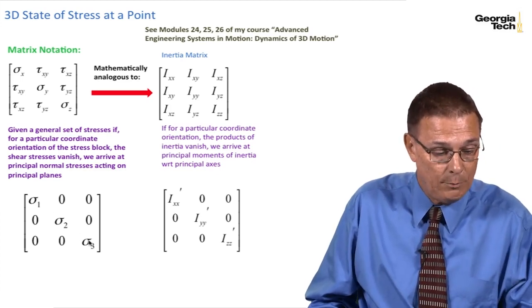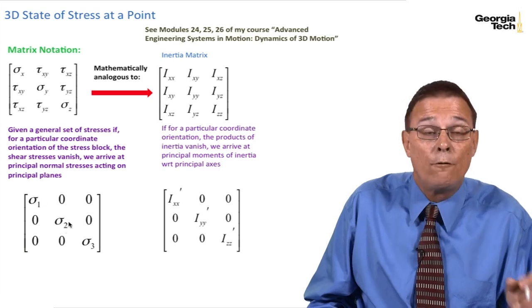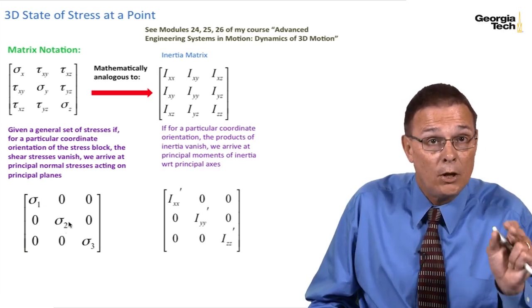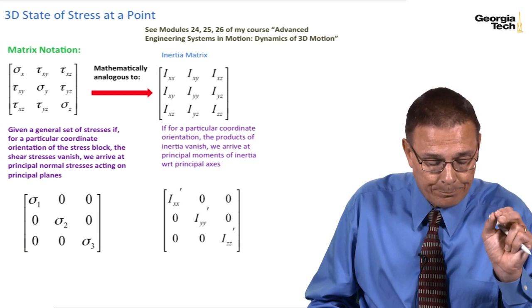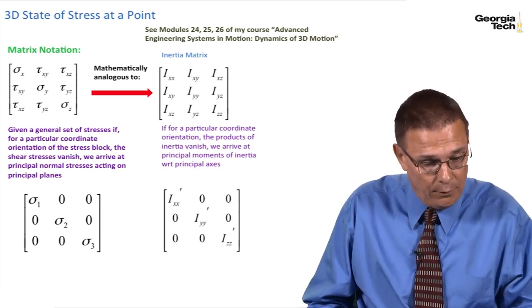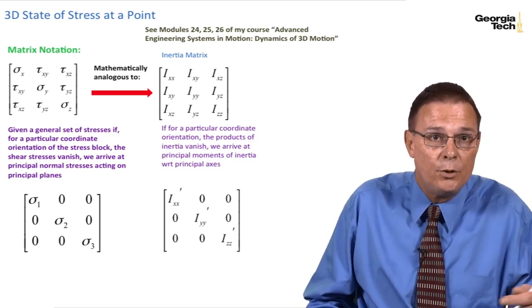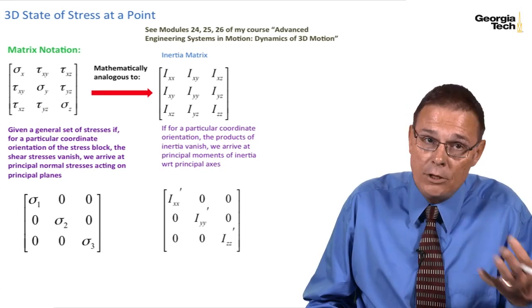And we call those sigma 1, sigma 2, and sigma 3. Now, we found sigma 1 and sigma 2 for a two-dimensional plane stress using Mohr's circle. We're going to use this technique to find the three principal stresses in this module, which could also be used in the plane stress problem.